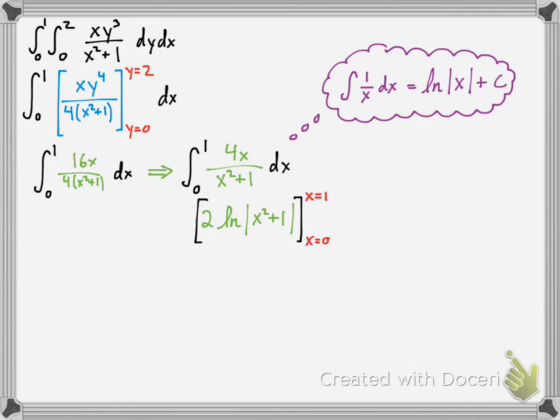And then you plug in those limits of integration. Make sure, well, they're already in x, so you should figure that out. And you should get 2ln 2. I want to make this under 4 minutes. So this was awesome. Thanks. Bye.